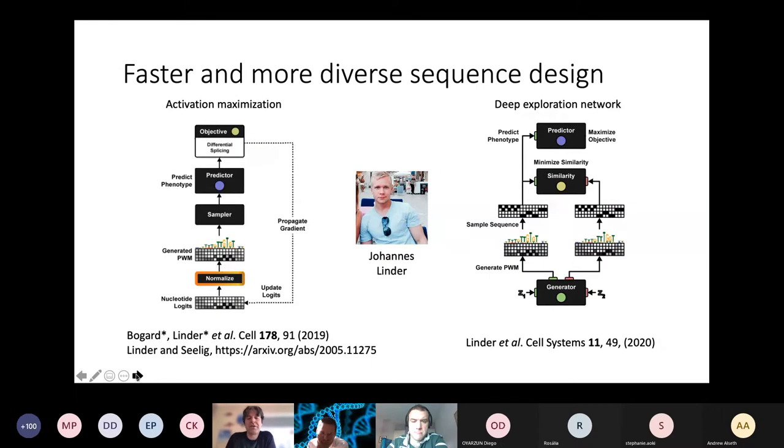I also want to make the point that the particular design approach that I showed you here is not super efficient. Basically, just keep querying the predictor over and over again is computationally intensive. Also this approach of doing single mutations has a tendency of getting stuck in local minima. I want to highlight a couple of papers from the lab that were really led by Johannes Linder, an exceptional grad student in the lab, on developing algorithms for making this design process much faster. For example, on the left, he came up with a sped up version of activation maximization. And on the right, this deep exploration network is a type of generative model that can spit out sequences for a given target that are both high quality and diverse.